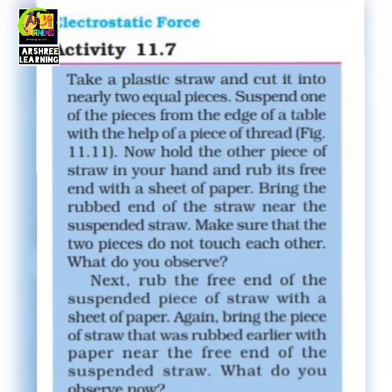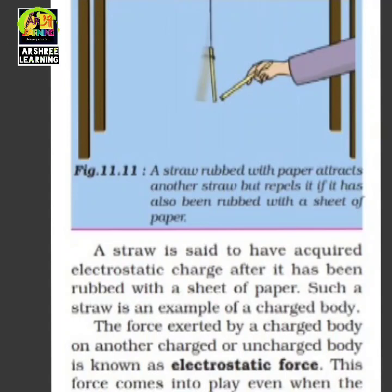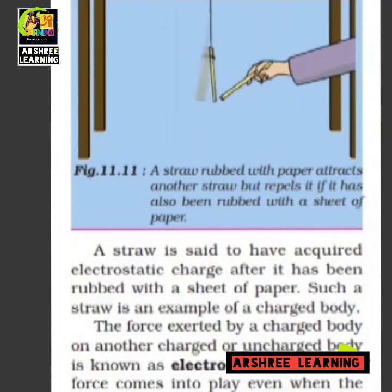This is an example of a non-contact force which acts at a distance. The straw acquires an electrostatic charge, and because of this the two pieces are pulled towards each other when they have opposite charges, or pushed away when they have the same charge. The force which makes the two straws move towards or away from each other is called electrostatic force. This force develops due to rubbing and is an example of non-contact force.